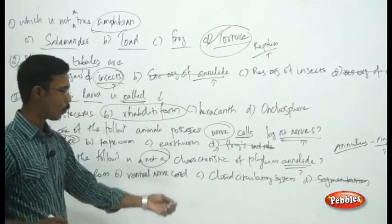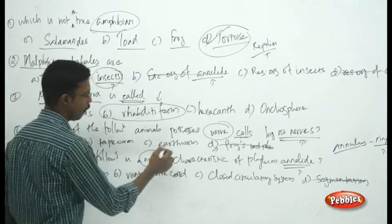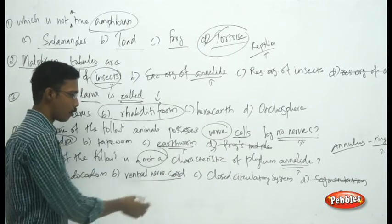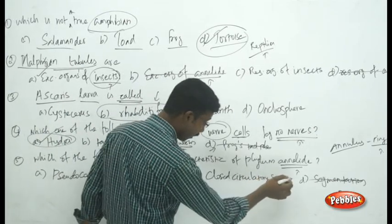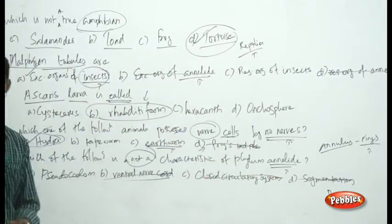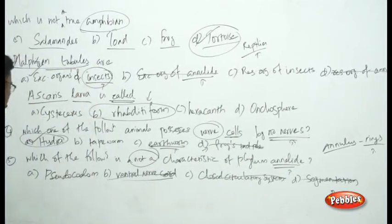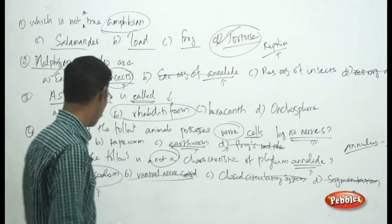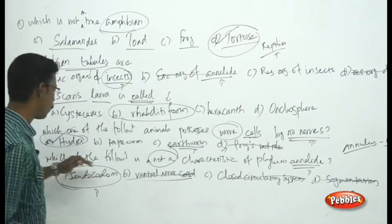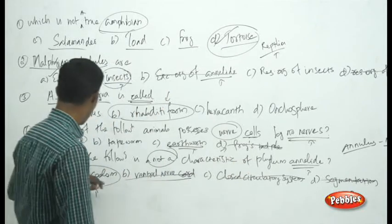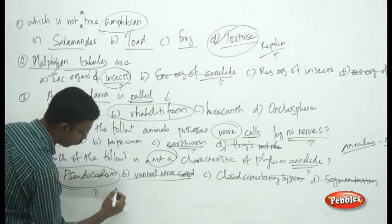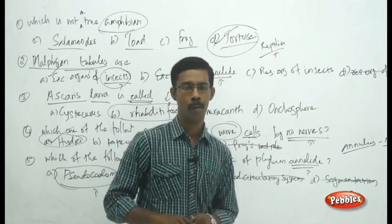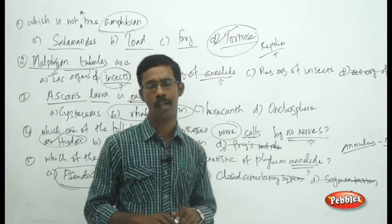Earthworm belongs to Annelida and has a primitive nerve cord, so you can eliminate ventral nerve cord. Annelida also has a closed circulatory system, so eliminate that too. The answer is pseudocoelom — this is not a characteristic of Annelida because Annelida are true coelomates; they have a true coelom in their body. That is how you have to understand and answer the question.